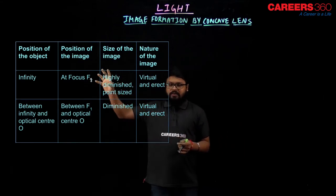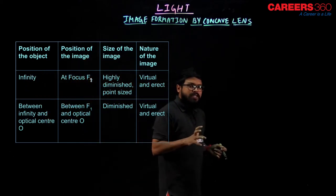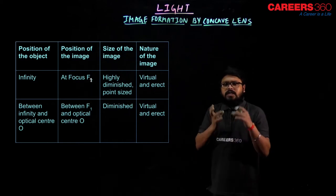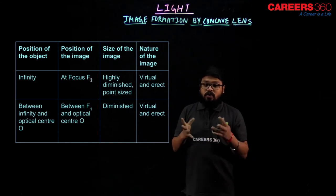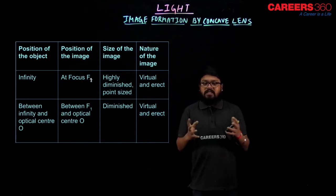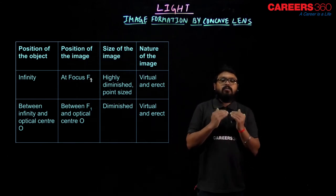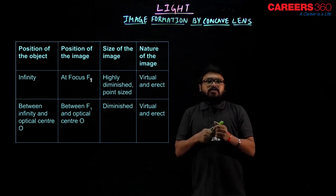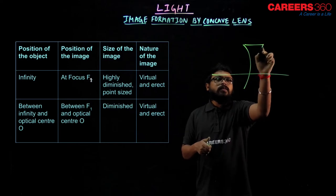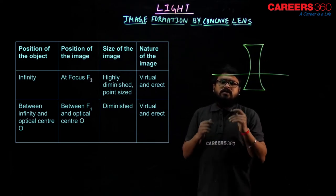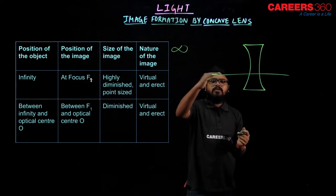For concave lens, the first position of the object is infinity. If the object is at position infinity for the concave lens, what is the position of the image? As we have already seen in the rules for lenses, in rule 1, if the ray is coming from infinity, it would be parallel to the principal axis. Let us draw the lens over here — this is our concave lens. For the ray which is coming from infinity, that ray would be parallel to the principal axis.